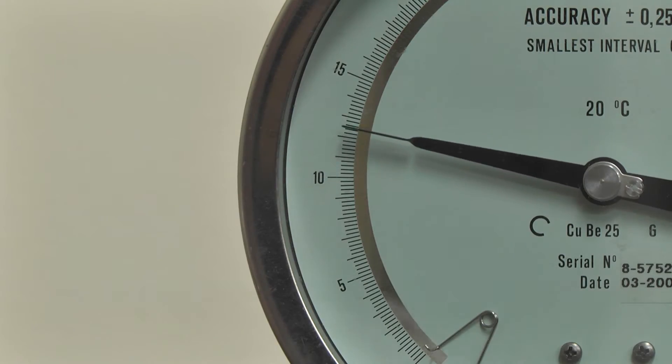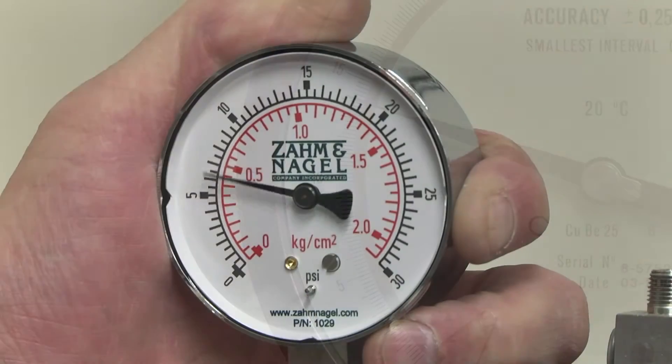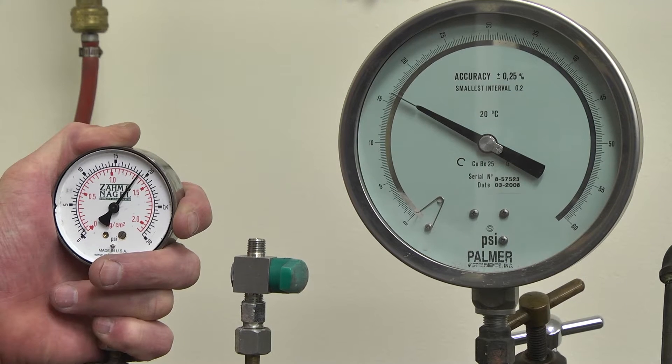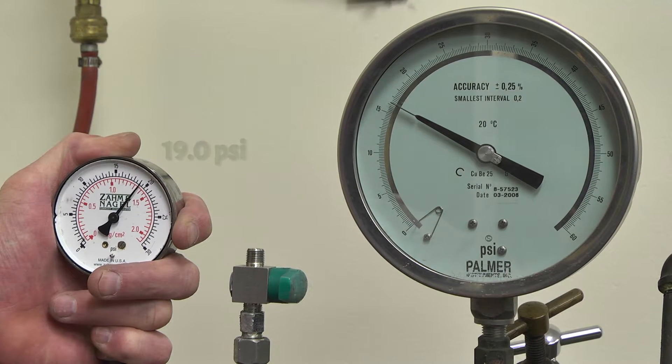Establish the pressure in the gauge tester equal to the highest pressure reading you may encounter in the CO2 tester. Compare readings on the subject gauge to the gauge tester.